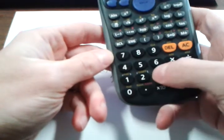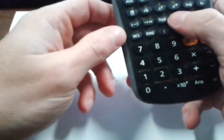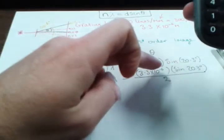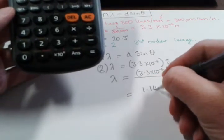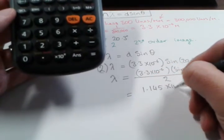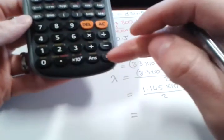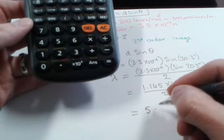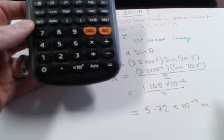So we get 3.3 by 10 to the minus 6 multiplied by the sine of 20.3 degrees. And then we can get what that is, which is going to be equal to 1.145 by 10 to the minus 6 all over 2. And then divide that by 2, and you get 5.72 by 10 to the minus 7 meters.